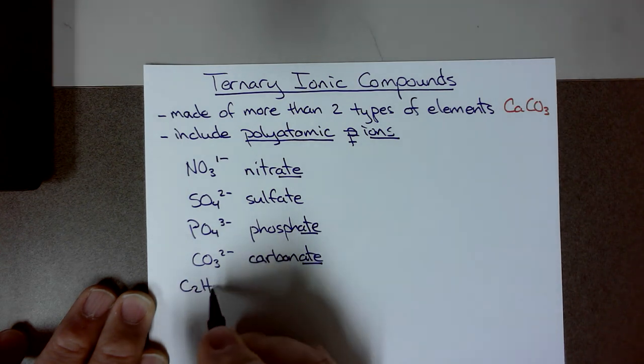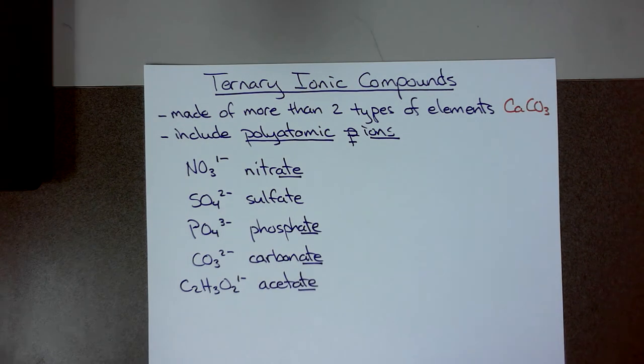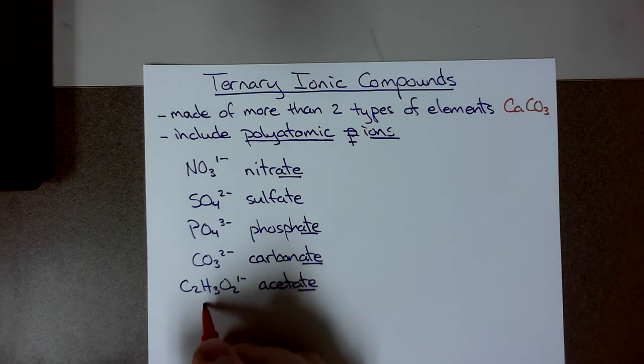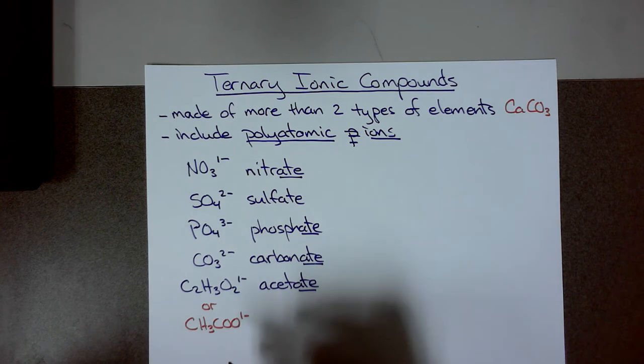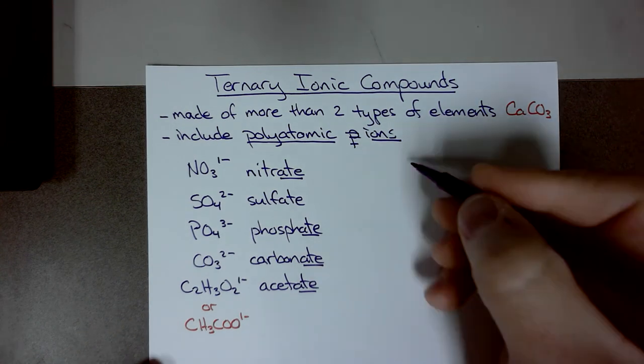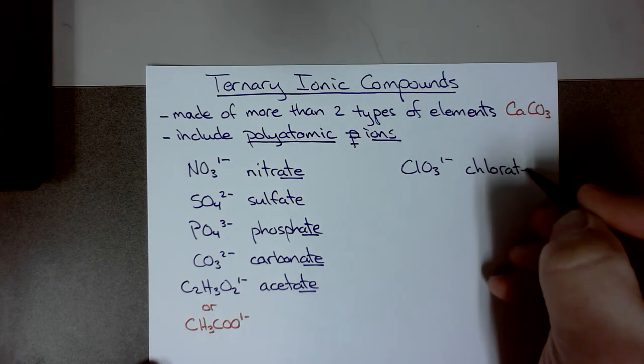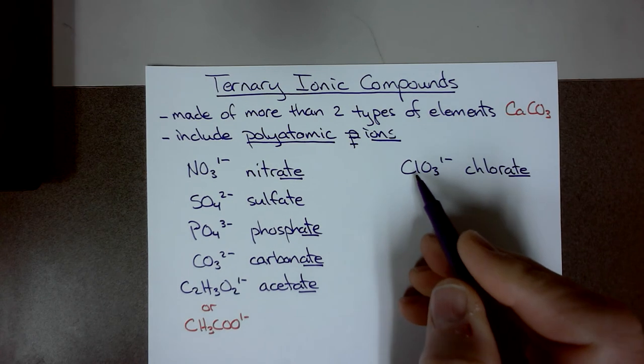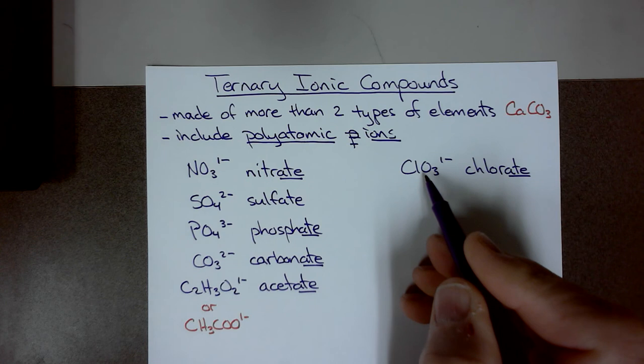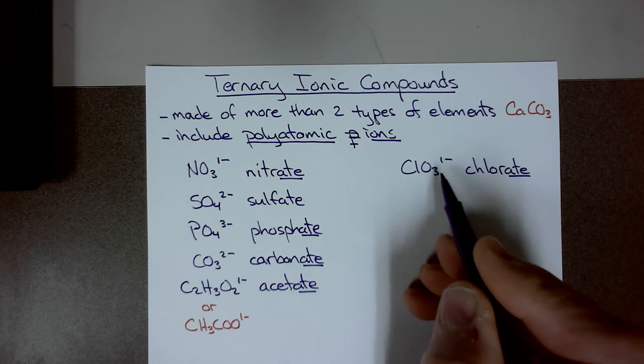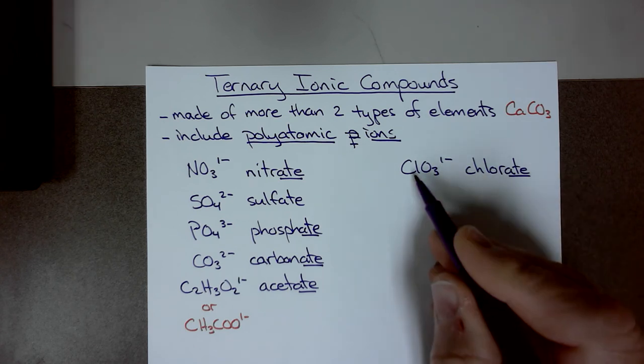And so we have also C2H3O2 1 minus which is acetate. Now acetate can be written differently. Or we could write it as CH3COO 1 minus. And usually in organic chemistry, that's the way you'll see it. Then we have ClO3 1 minus, which is chlorate. Now in this case, I need to mention that if you have a halogen—fluorine, chlorine, bromine, or iodine—you can substitute a halogen for another halogen. And you'll have a very similar polyatomic ion. In other words, if I put a bromine here and it's BrO3 1 minus, then you'd say bromate. Or I can put an iodine here, IO3 1 minus, and be iodate.